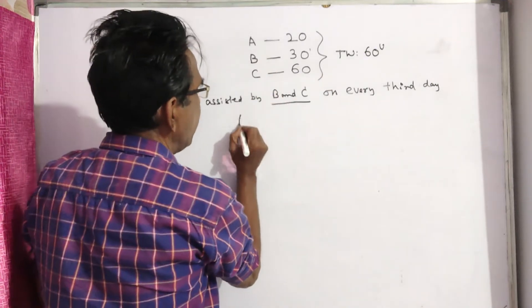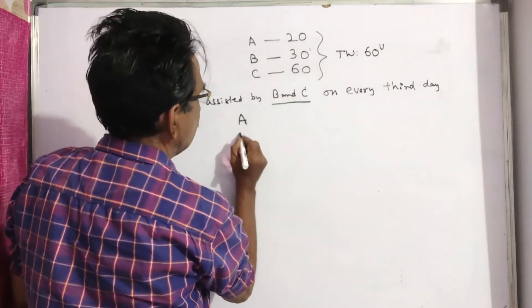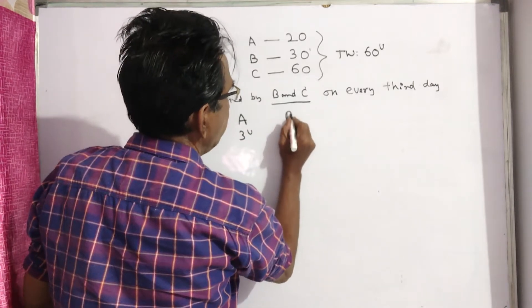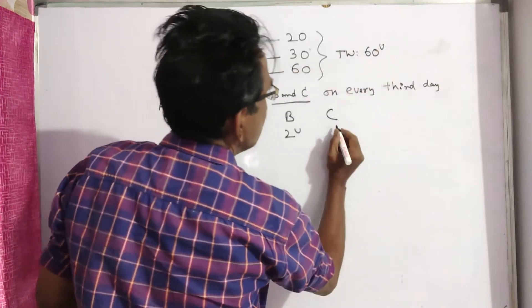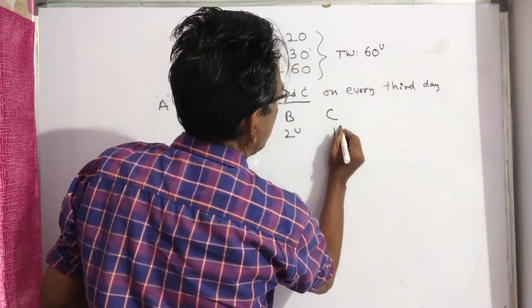Now A can do 3 units of work per day. B can do 2 units of work per day. C can do 1 unit of work per day.